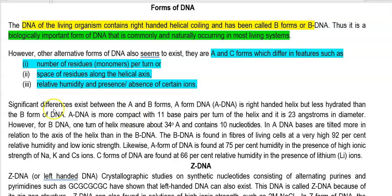C form of DNA exists when relative humidity is 66% with the presence of lithium ions. Z-DNA is also referred to as left-handed DNA or left-handed helix DNA. This form of DNA predominantly occurs as synthetic nucleotides — they do not occur in nature and can only be artificially synthesized.